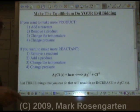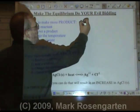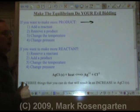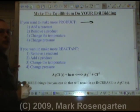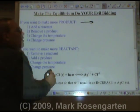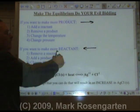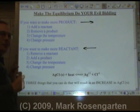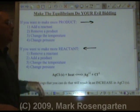Here's how you can make an equilibrium do what you want it to do. If you want to make more product, you want to shift in the direction that makes more product. You can do this by adding reactant, removing a product, or changing the temperature and pressure to make it shift in that direction. If you want to make more reactant, you want it to shift towards the reactant side. You can remove a reactant — it will shift to make more — or add a product, and it will shift away from the product to use it up. Or change the temperature and pressure in such a way that it makes the equilibrium go in reverse.